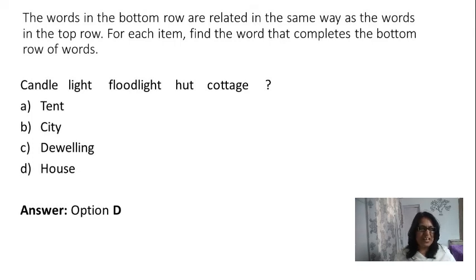Let's have another question. Now this is a different question. It says that the words in the bottom row are related in the same way as the words in the top row. For each item, find the word that completes the bottom row of words. The first question is: candle, light, floodlight, hut, cottage, and what do you think will come next? Can it be a tent, city, dwelling, or a house? Well, the answer is D, a house, because the relationship shows a progression of sources of light. The relationship below that particular line shows a progression of types of housing from smallest to the largest.